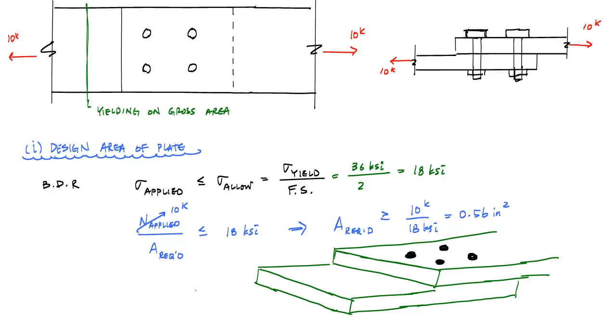And that means that whatever cross-sectional area that I choose, I have to have an area that's greater than or equal to 0.56 inches squared. So here, I've drawn for you what the connection looks like in 3D. And what this A required means is that I have to choose this cross-sectional area here for both of the plates. But I have to choose this cross-sectional area so that it's greater than or equal to 0.56 inches squared in order to satisfy this basic design relationship.